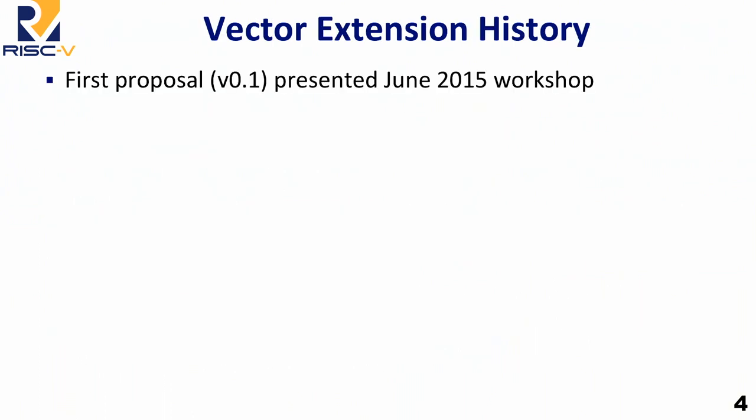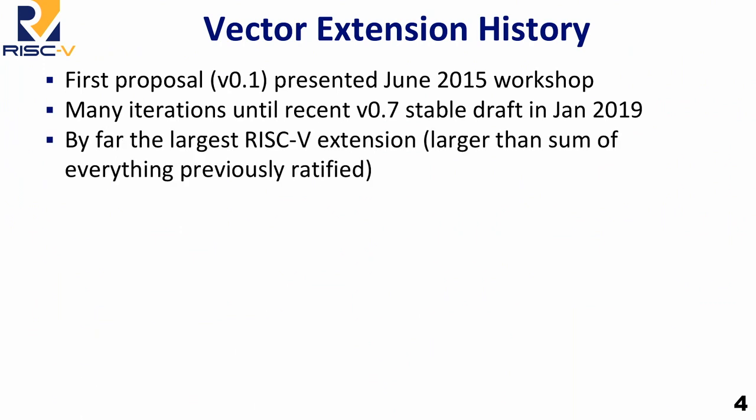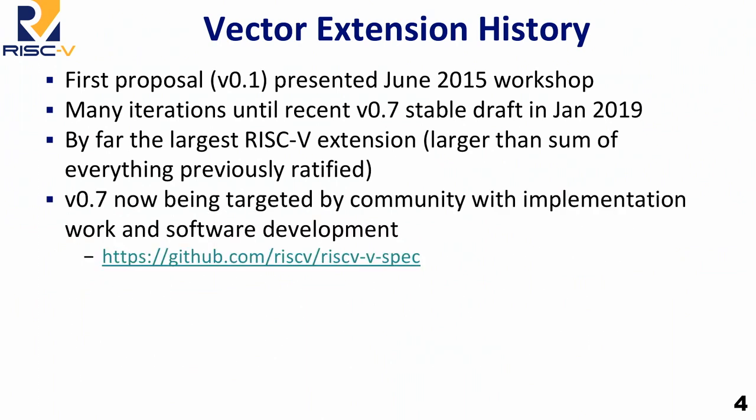The first proposal was at the June 2015 workshop. We've had many, many iterations — it's evolved, it's become a saga. You thought Game of Thrones went on for too long; this thing has gone on for many years. But at the beginning of this year, we finally had a stable draft that folded in everybody's desires as much as we could. That 0.7 draft came out in January. One thing I realized is this is by far the largest RISC-V extension — it's bigger than everything else put together, which is partly why it's taken so long.